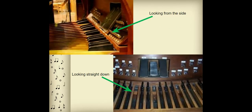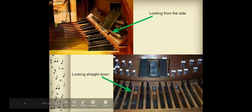So if you're looking at the instrument, this is what it would look like from the side with the pedalboard. And if you're looking straight down, you have black notes, and that's just like the black notes on the keyboard. And then you have these other notes, and these are just like the white notes on the keyboard.